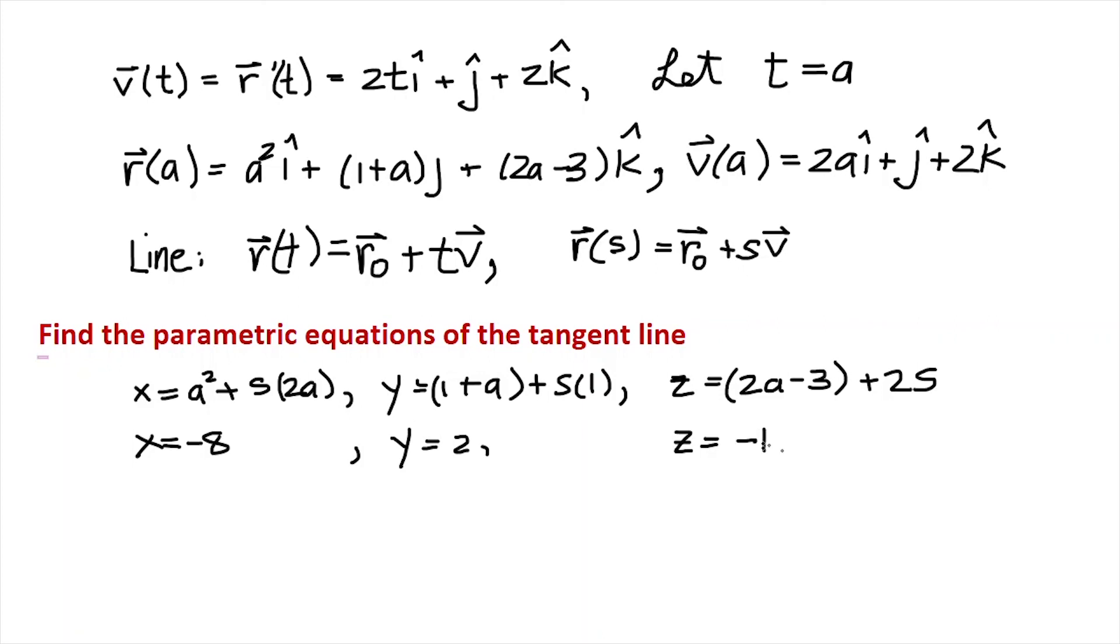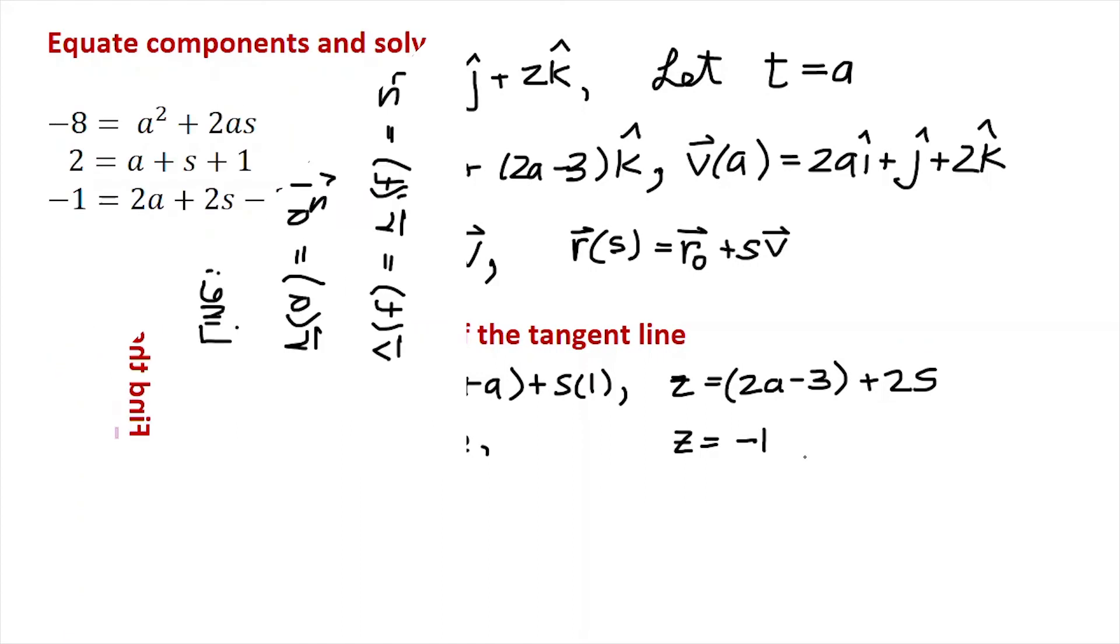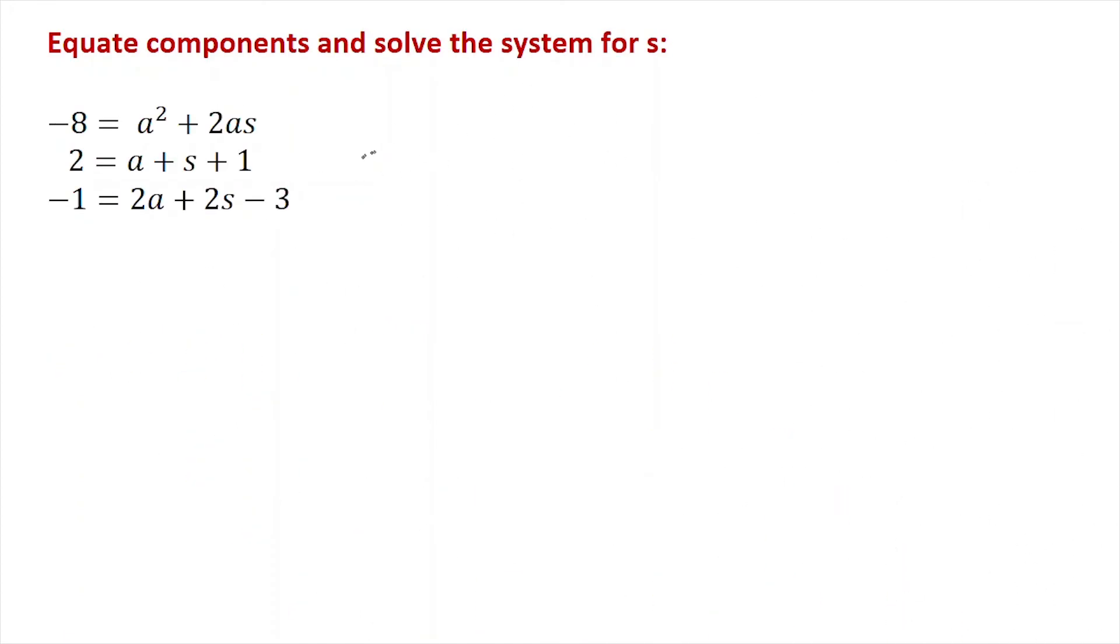So now what I need to do is equate these components and solve the resulting system. We want to equate components and solve this system for s. I'm going to take that middle equation, and that's going to give me s = 1 - a, and then I'm going to substitute that into the first equation. So I'm going to put that into -8 = a² + 2a(1 - a).